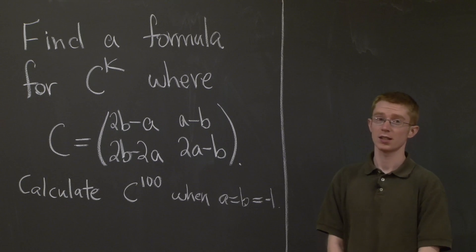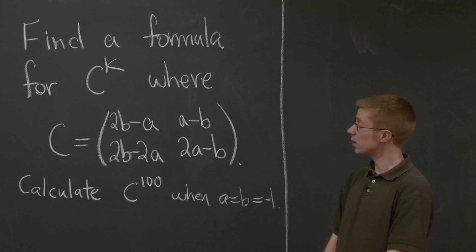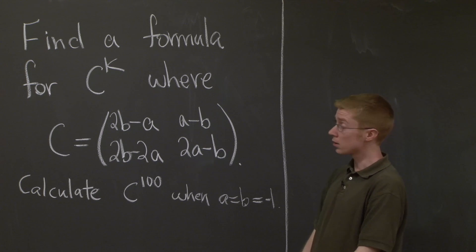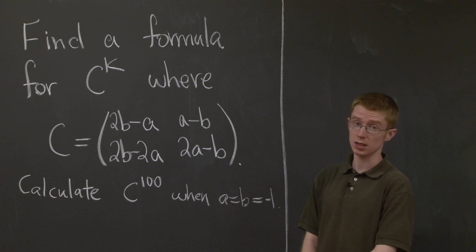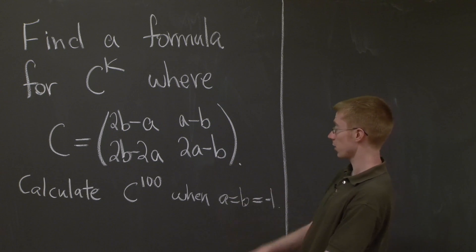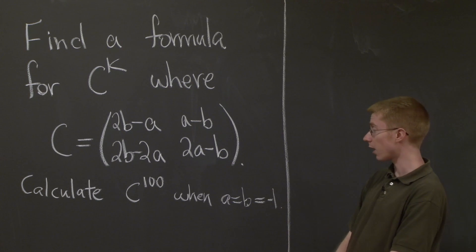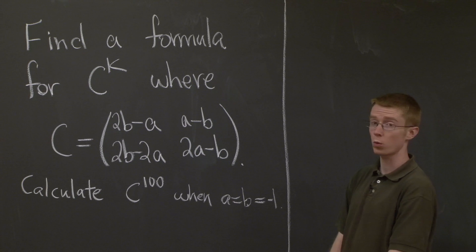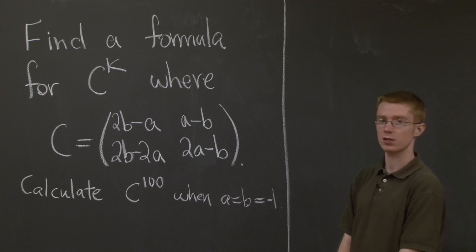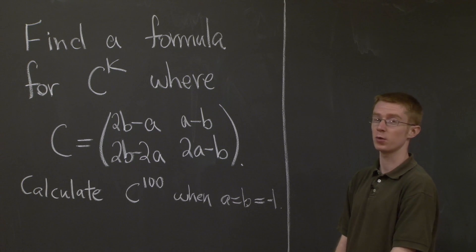Hi, and welcome. Today we're going to do a problem about powers of a matrix. Our problem is first to find a formula for the k-th power of this matrix C. This is a 2 by 2 matrix that depends on variables A and B. And the second part of our problem is to calculate C to the 100th in the special case where A and B are negative 1.